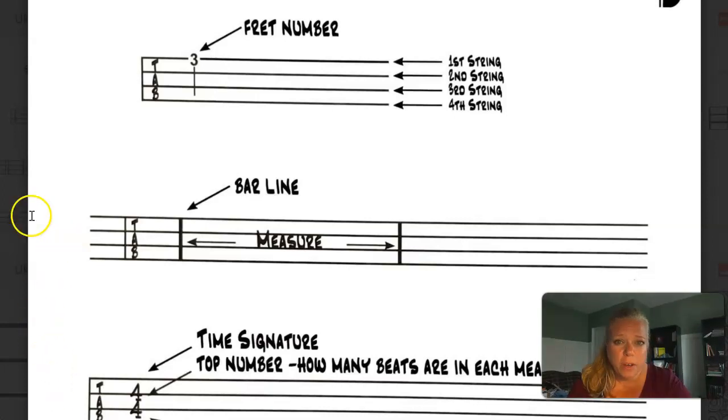As you can see up top here, we have usually off to the very left the clef indicator. It'll either say tab or a big letter T, and that lets you know you are playing tablature.